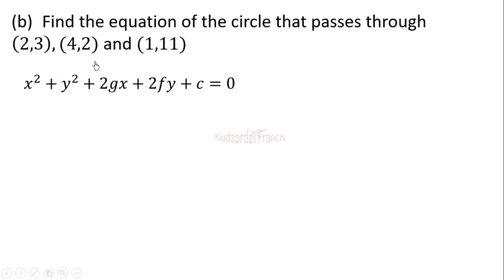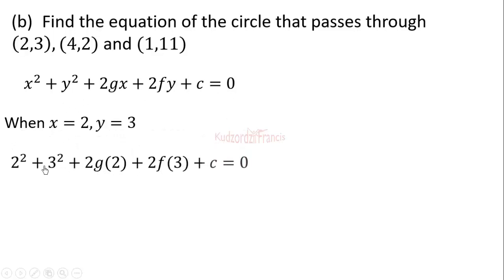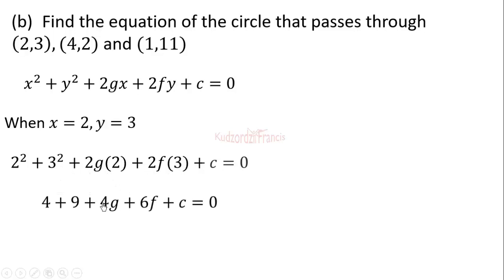Since these points lie on the circle, each must satisfy the equation. Taking the first point (2, 3): substituting x equals 2 and y equals 3, we get 4 plus 9 plus 4g plus 6f plus c equals zero. Simplifying, 4 plus 9 is 13, giving us equation 1: 4g plus 6f plus c equals negative 13.